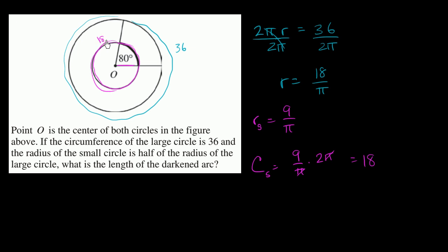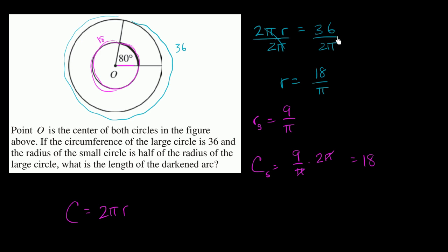It might have already jumped out at you: circumference is directly proportional to radius for any circle. So if you have half the radius, you have half the circumference — you wouldn't have had to go through all of that. If the larger circumference is 36 and you have a circle with half the radius, its circumference is going to be half that: 18.